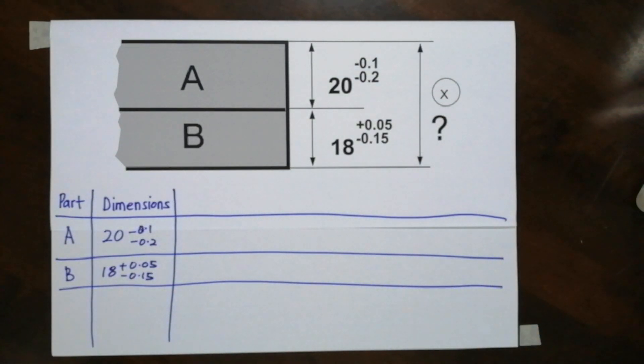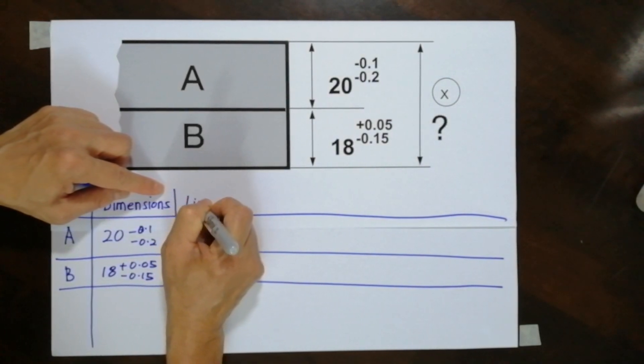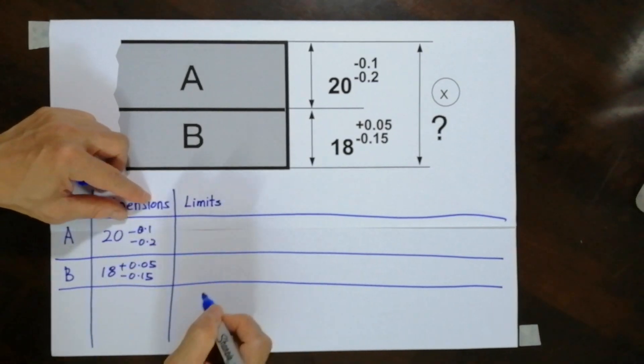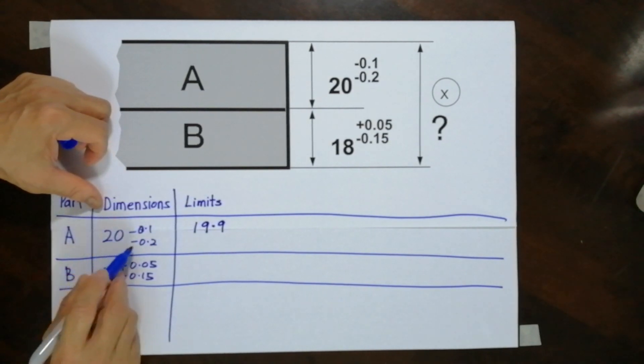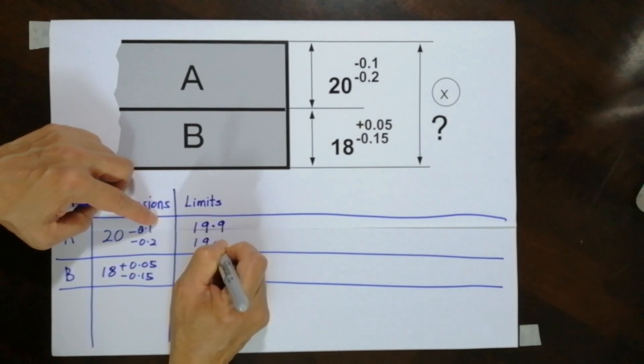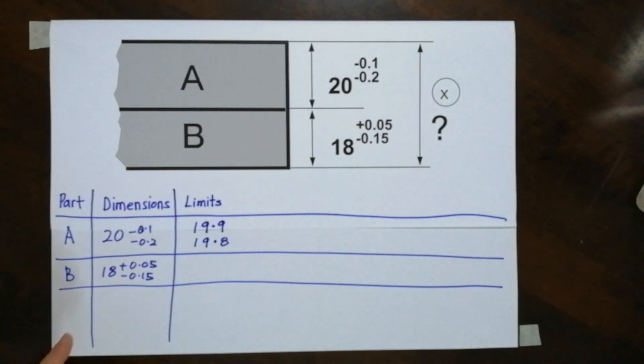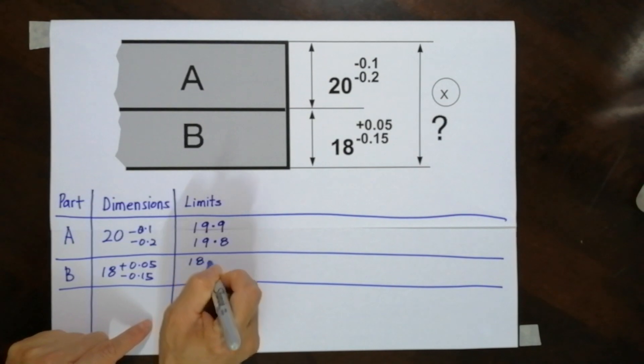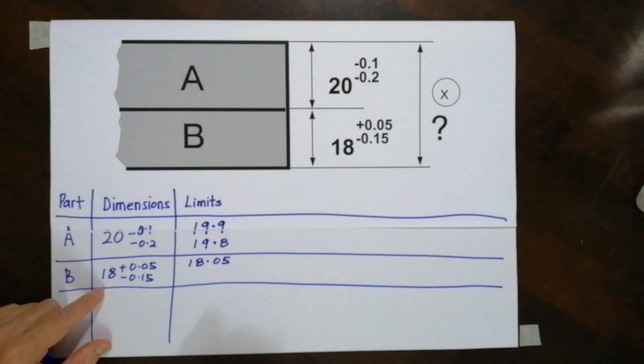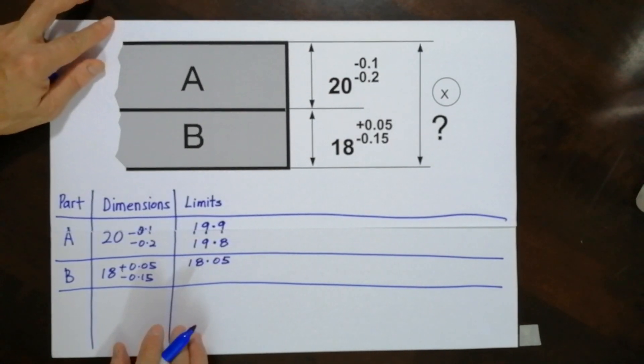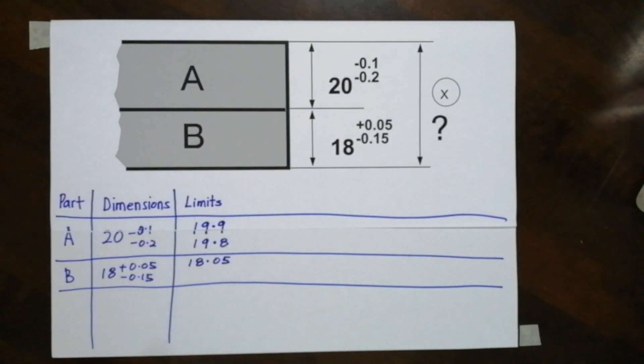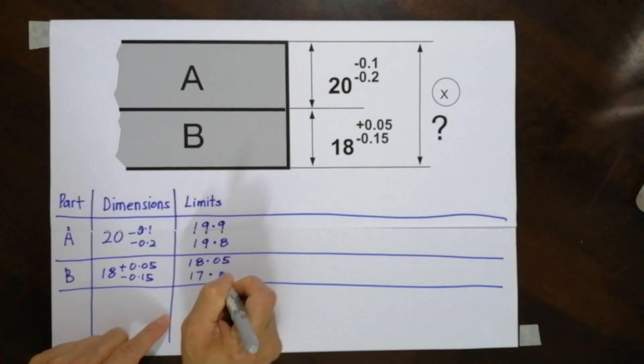Now the next line that I'm going to do is called the limits. I hope you can still remember how we do our limits. The upper limit will be 19.9, and the lower limit, which is 20 minus 0.2, I'll get 19.8. So similarly for this side, I will have 18.05 for the upper limit. And the lower limit, which is 18, so if I'm going to subtract 0.15, I will get 17.85.